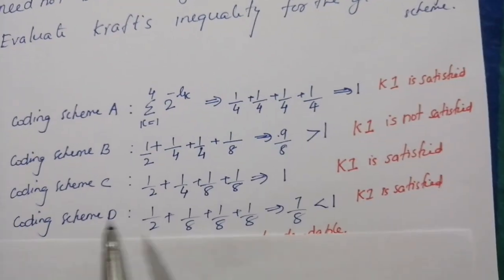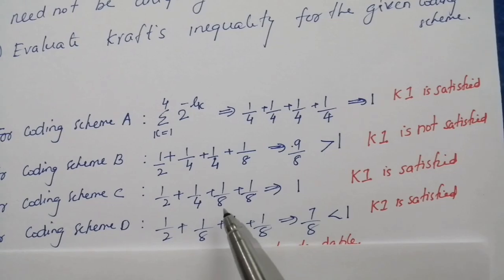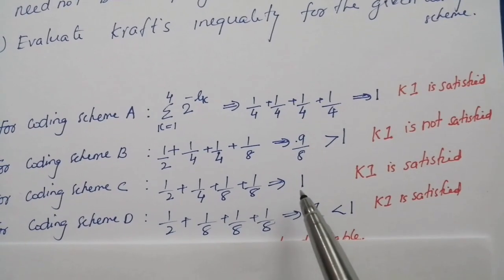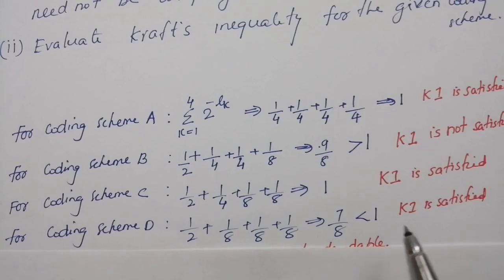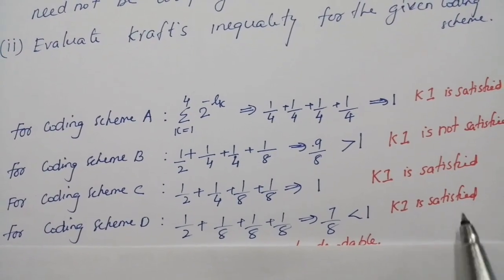In coding scheme C, it is 1/2 plus 1/4 plus 1/8 plus 1/8, it is 1, so Kraft's inequality is satisfied. For coding scheme D, Kraft's inequality is satisfied.